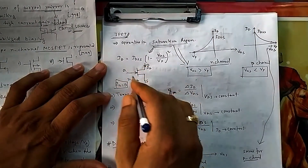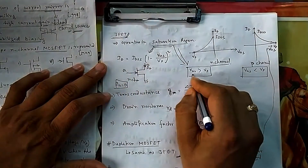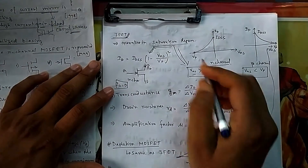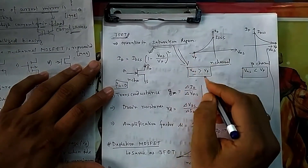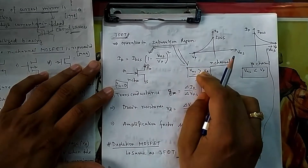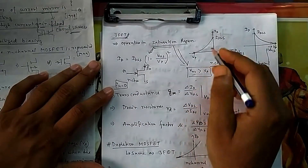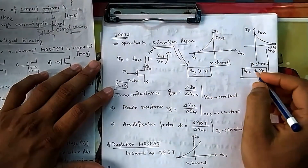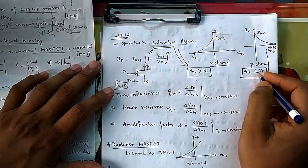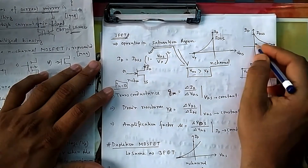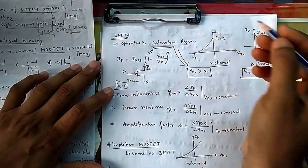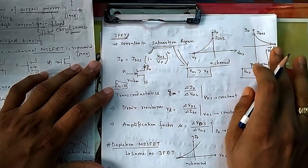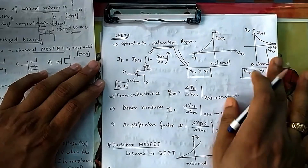The JFET has three terminals: gate, drain, and source. For an N-channel JFET, if V_GS is greater than V_P (pinch-off voltage), then drain current I_D will flow. For a P-channel, the reverse applies — if V_GS is less than V_P, current increases; if it goes beyond that, it enters cutoff and no current flows through I_D.